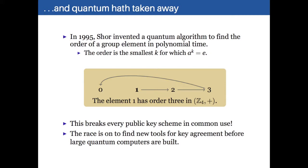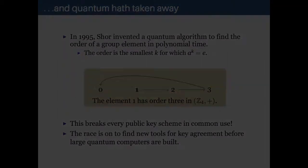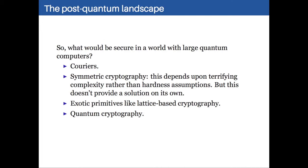Now the current record for Shor's algorithm, I believe, has shown that 35 equals 7 times 5, under the assumption that its factors are 7 and 5. So there's still some way to go. But a lot of people are worried that there's going to be a big breakthrough, and we'll all be in trouble. So what would still be secure even if large quantum computers came to exist? Well, couriers obviously are still safe. No matter how much computational power you have, you can't really look inside someone's briefcase.